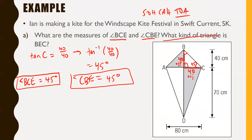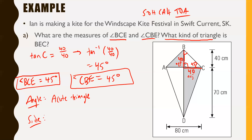To answer the last part: what kind of triangle is BEC? It depends on whether you look at it by side length or by angle measure. By angle measure, you would call it an acute triangle. By side length, notice that two sides are the same length — the hypotenuse will not be the same length, so it's not equilateral. Since two sides are equal, that's called an isosceles triangle. So it's either an acute triangle or an isosceles triangle depending on your perspective.